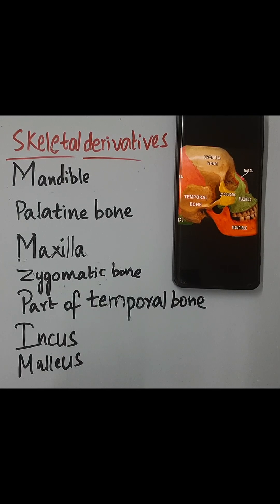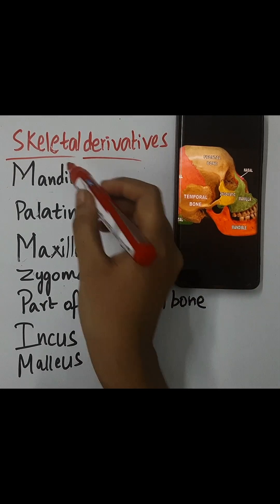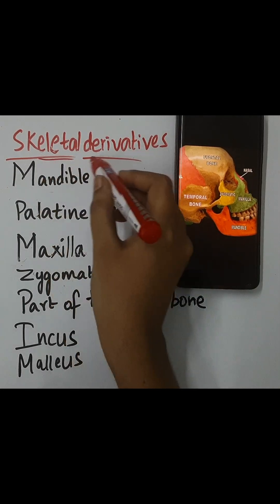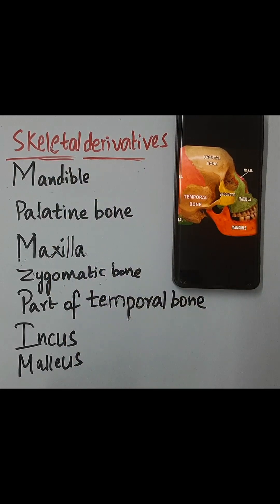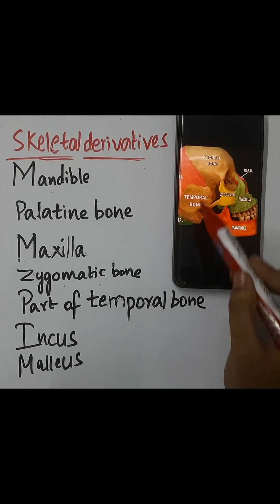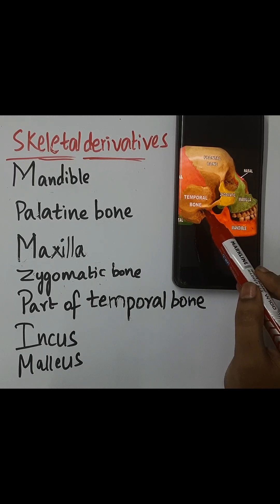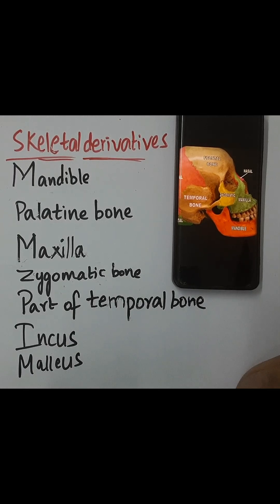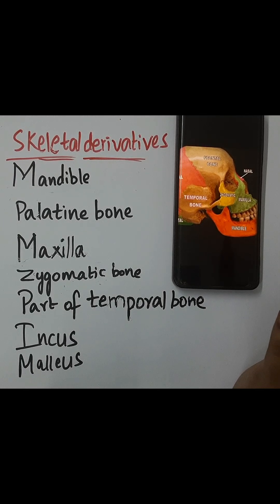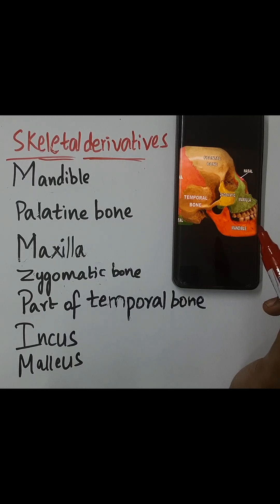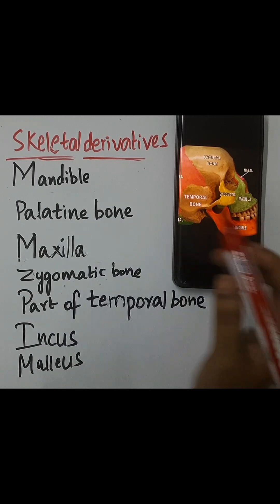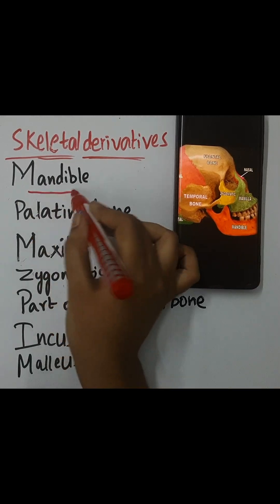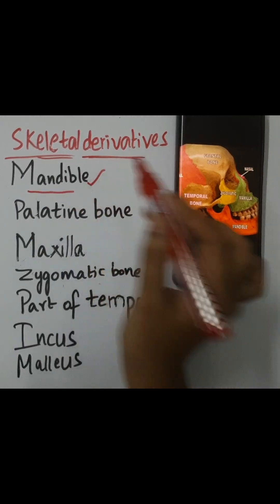In this video we are going to see about the 1st pharyngeal arch and its skeletal derivatives. The 1st pharyngeal arch is also known as the mandibular arch. Remember the side view of the skull — write the word mandible.